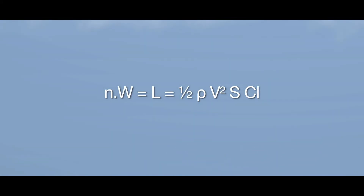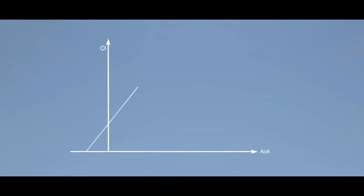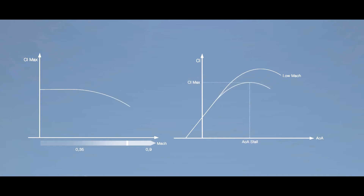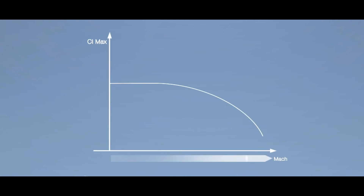Let's see how the CL max varies with Mach number. The general lift equation expressed in Mach condition becomes: N times W equals L equals 0.7p Mach squared S CL. At a low Mach number, for a given configuration, a wing stalls at a given angle of attack. Beyond a given Mach number — order of magnitude Mach 0.35 — any Mach number increase has two consequences: the angle of attack at which the wing stalls decreases, and the maximum lift coefficient obtained at stall angle of attack decreases as well. This means that at high altitude, where Mach effects become significant, the margin from the stall decreases.